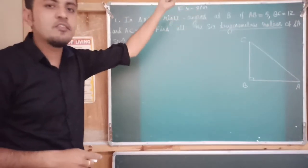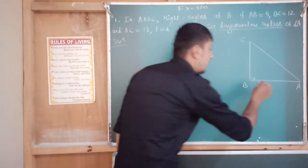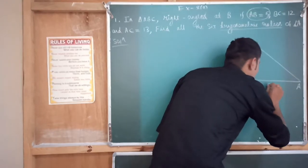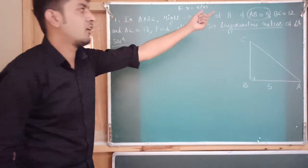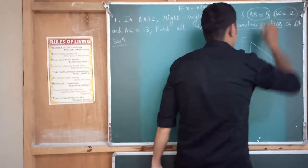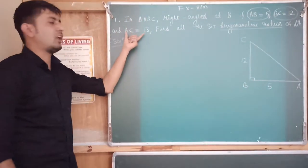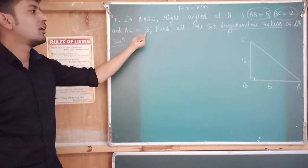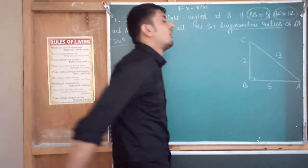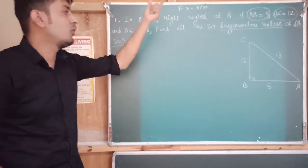Now let us see what is given. In the question they have said AB is equal to 5, so AB will be 5. Then BC is 12, so your BC will be 12. And finally your AC is given to be 30.